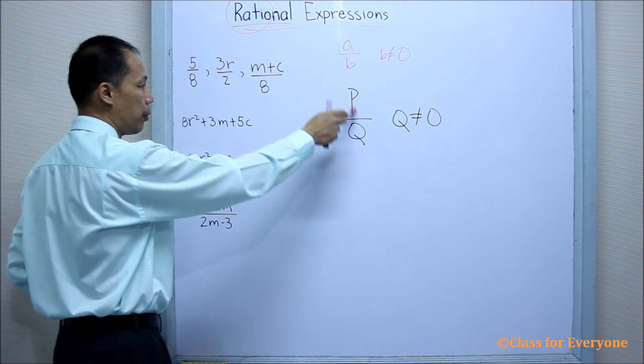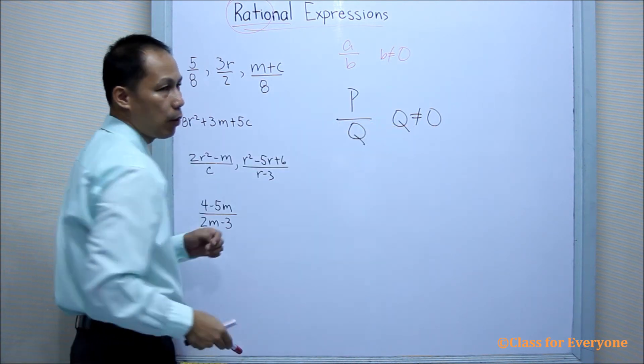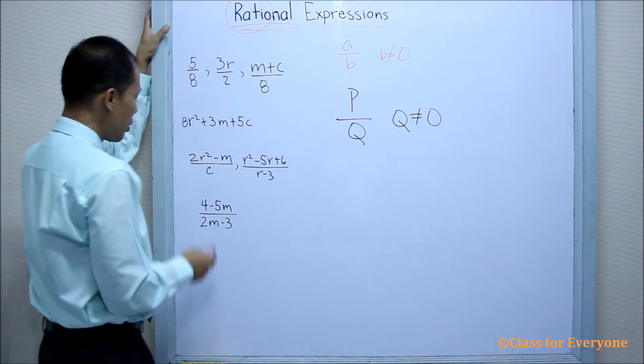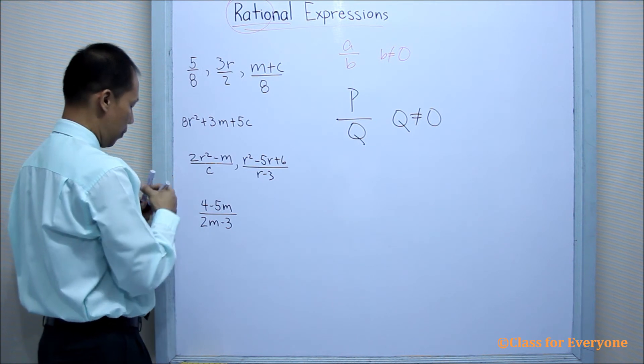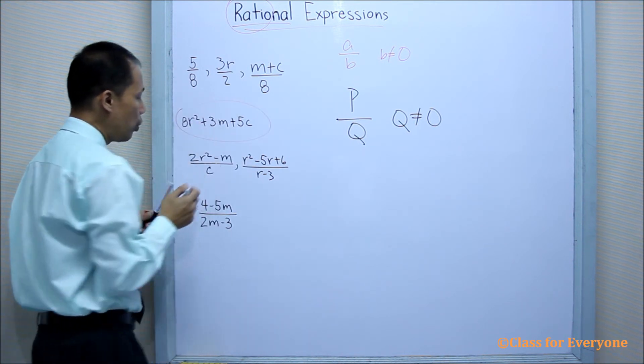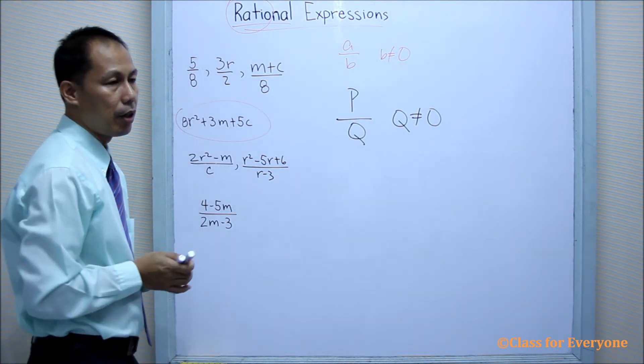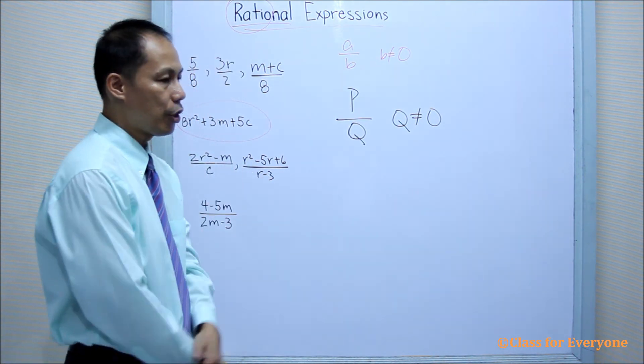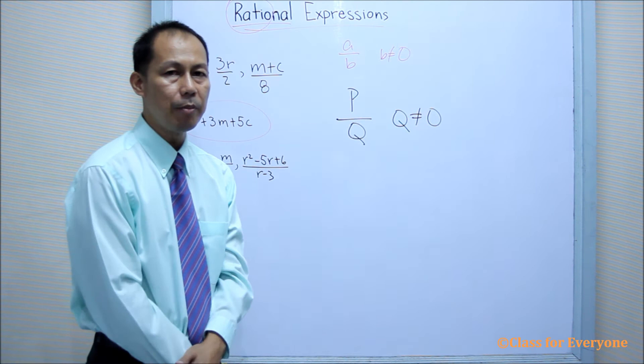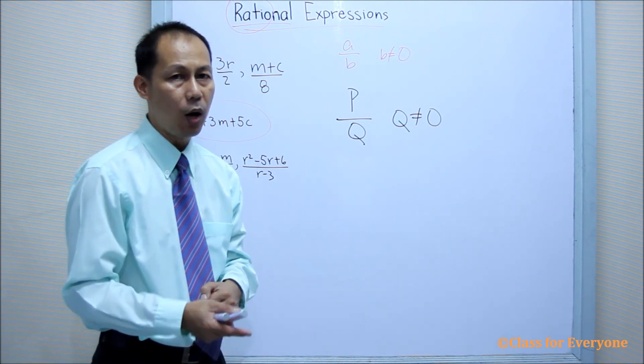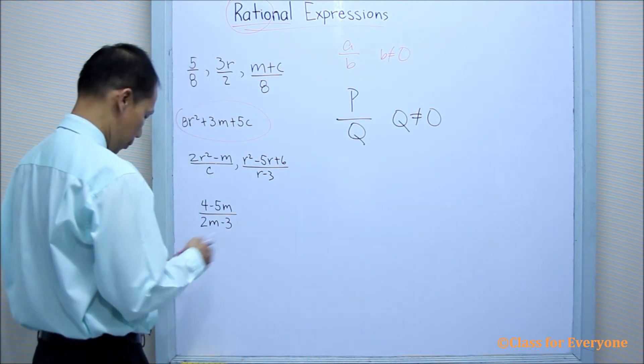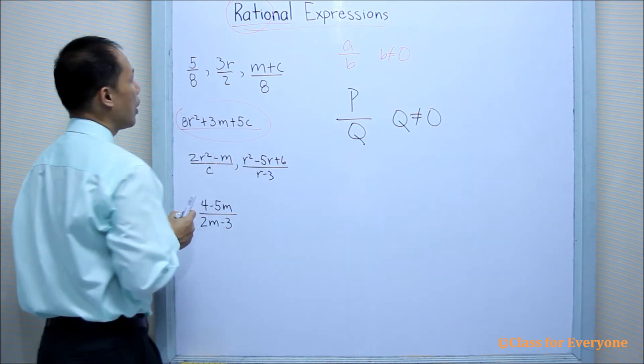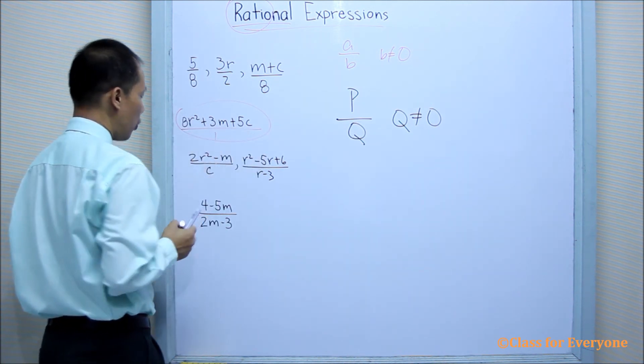They are in the form P over Q, wherein Q is not equal to zero. But you'll notice that in this example, we do not have a denominator. Just like in real numbers, integers which do not have a denominator actually have a denominator of 1. So therefore, this rational expression has a denominator of 1.